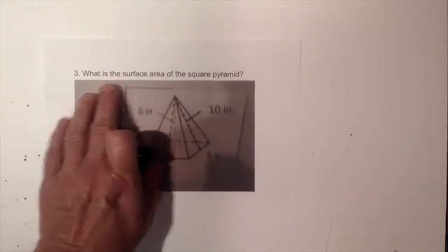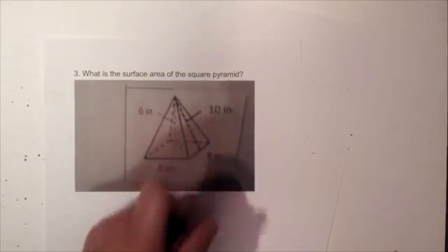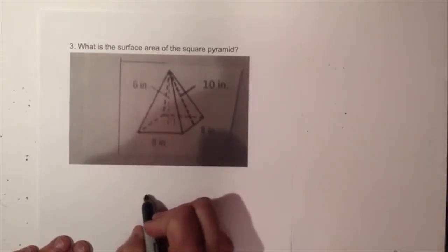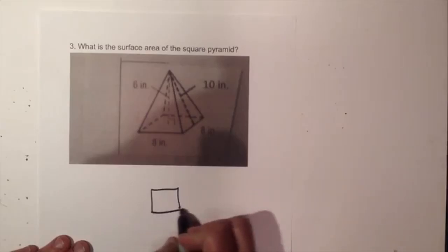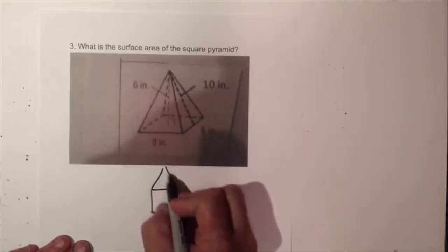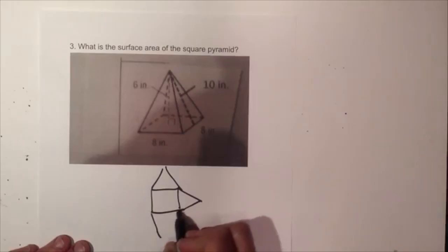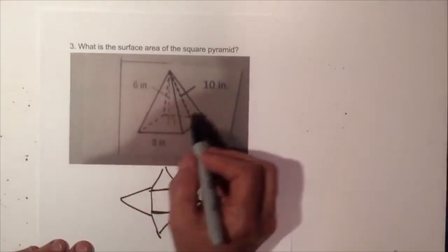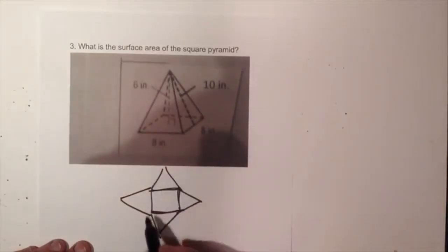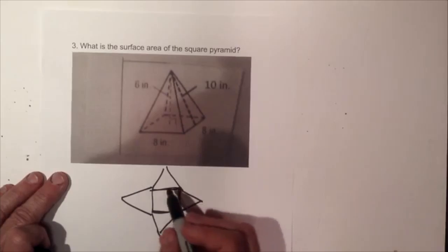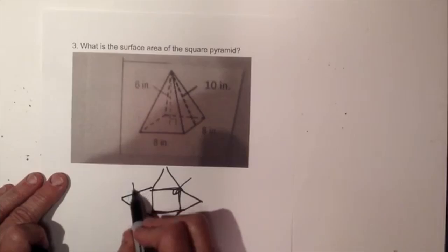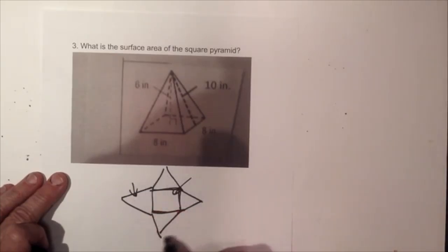Now we're switching shapes — we're going to find the surface area of a square pyramid. I'll draw what's called a net, which means taking the three-dimensional object and laying it flat. When I lay this pyramid flat, I have a square in the middle and four triangles folding out from each side. I can find the area of the square and one triangle, then multiply the triangle by four.